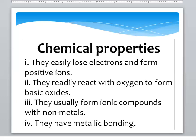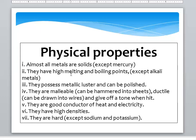Some physical properties: almost all metals are solid in nature except mercury. They have high melting and boiling points except alkali metals. They possess metallic luster and can be polished. They are malleable, can be hammered into sheets, ductile, can be drawn into wires, and give a tone when struck. They are good conductors of heat and electricity. They have high densities. They are hard except sodium and potassium.